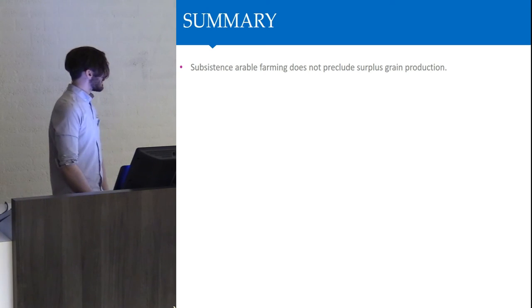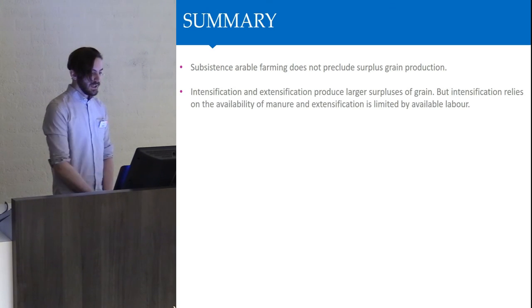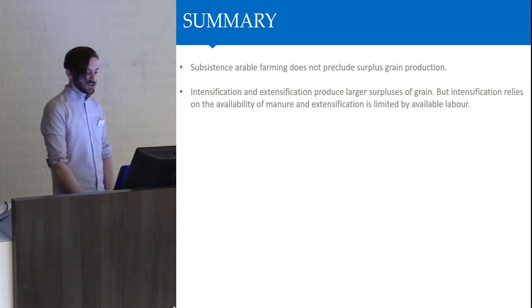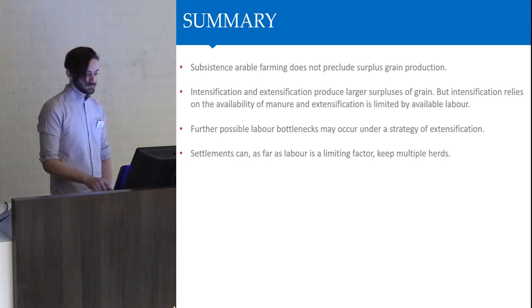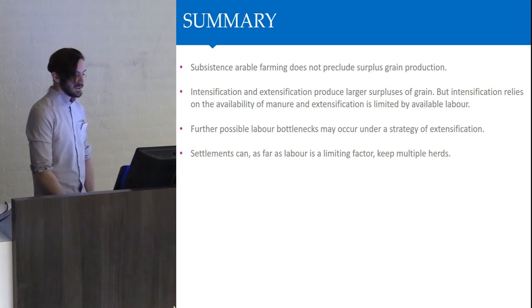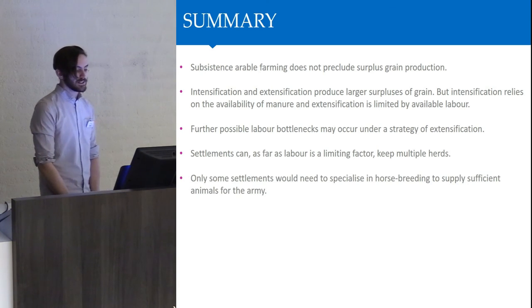Moving to the summary of surplus production: subsistence arable farming does not preclude surplus grain production, but neither does it guarantee it. Intensification and extensification produce larger surpluses of grain, but intensification relies on the availability of manure, and extensification is limited by available labour. We can see further possible labour bottlenecks occurring under extensification for small households. Settlements can, as far as labour is a limiting factor, keep multiple herds. And only some settlements would have needed to specialize in horse breeding to supply sufficient animals for the army.